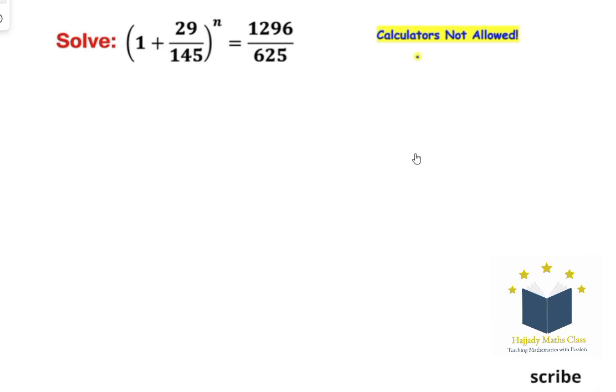For us to proceed, the first thing we need to do is solve what is inside the parentheses. We have 1 plus 29 over 145. We can divide this by saying 29, 1 here we have 5, so by writing this we have 1 plus 1 over 5. Finding the LCM of this, we have 5 plus 1 which gives 6 over 5.